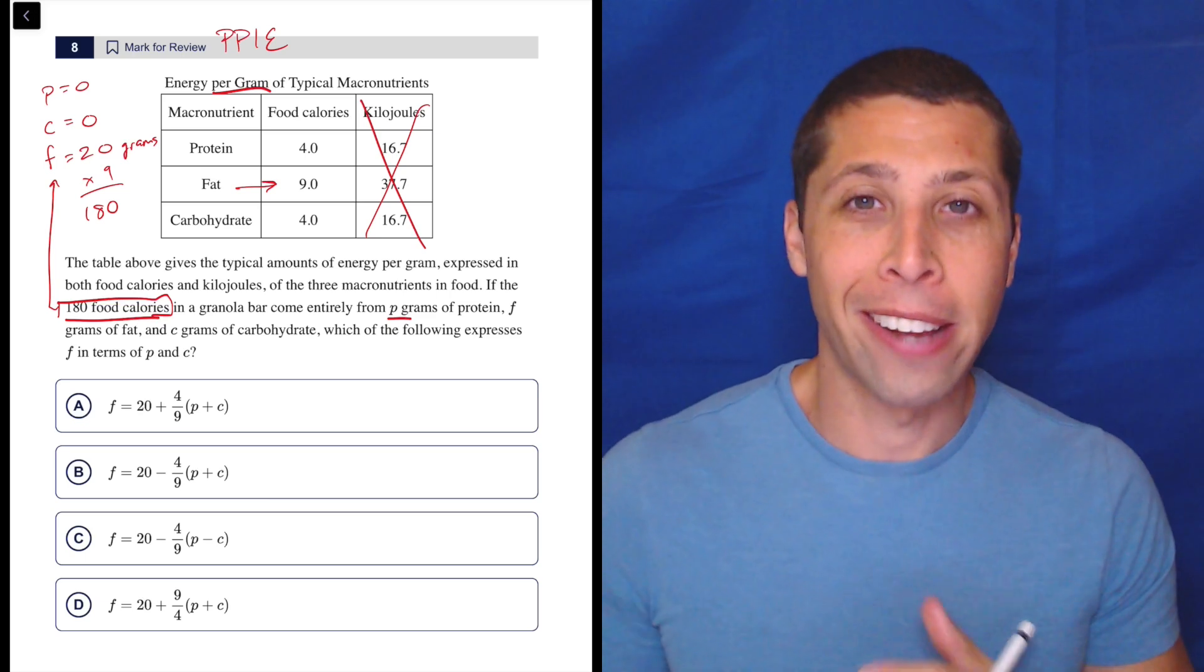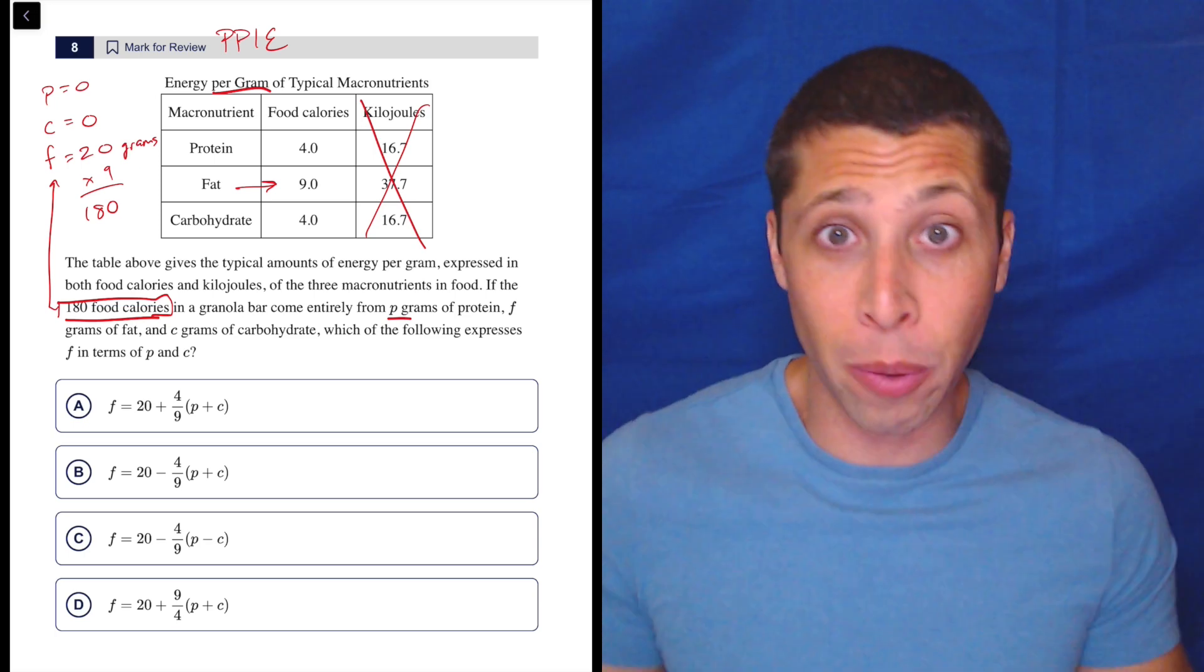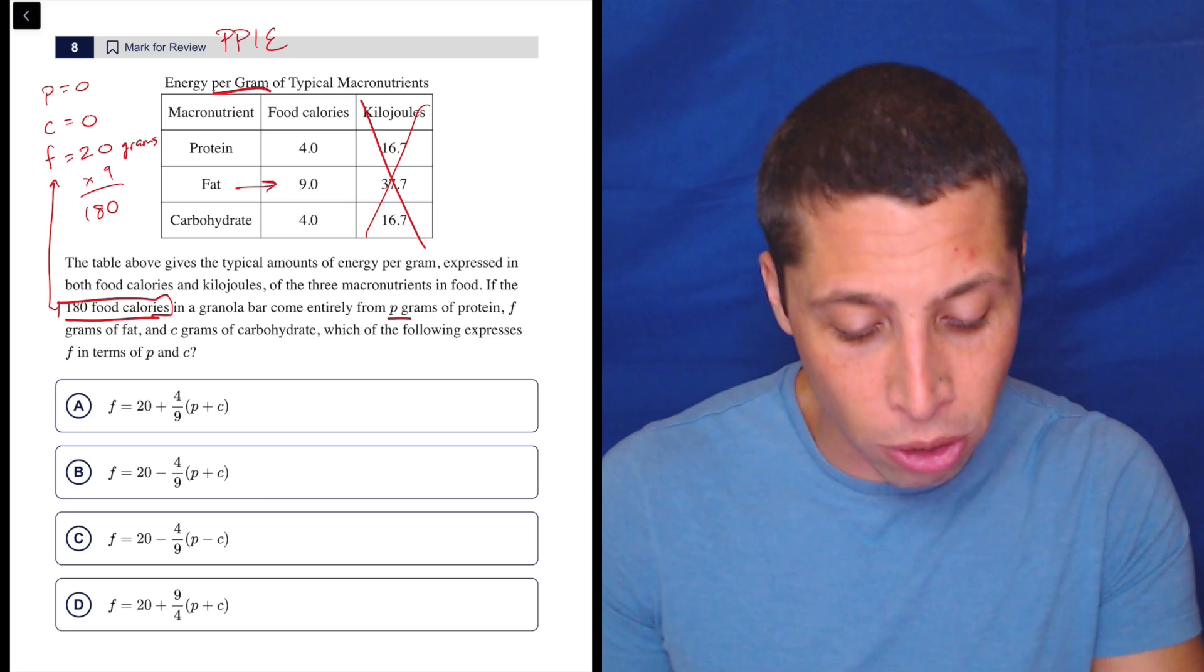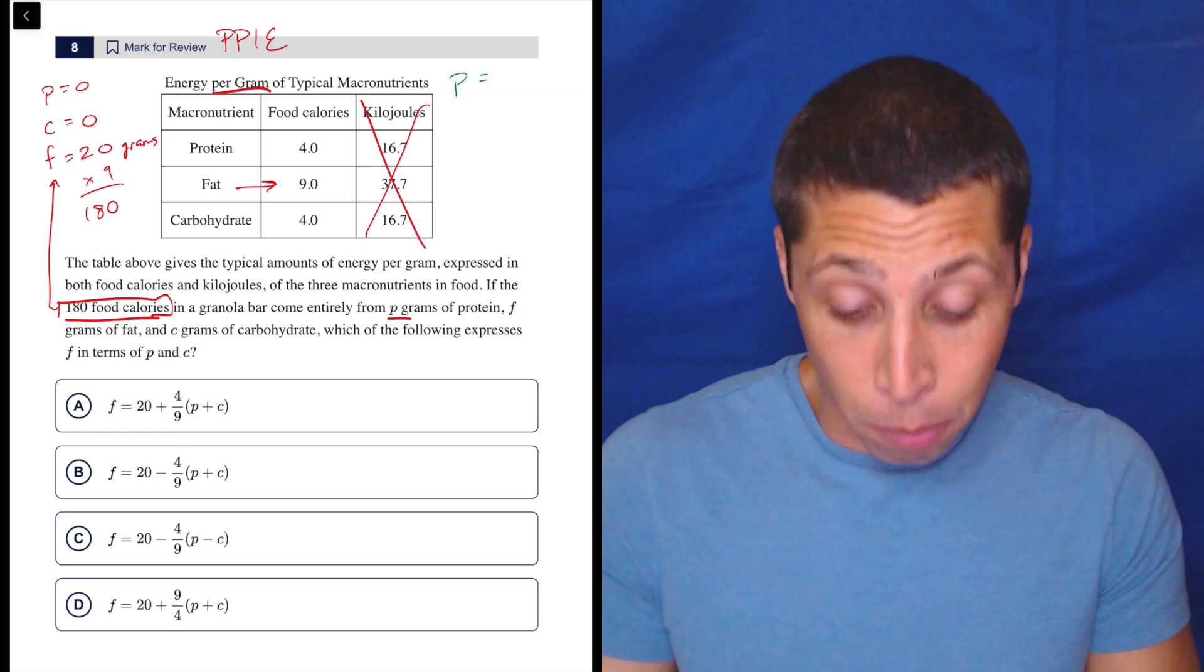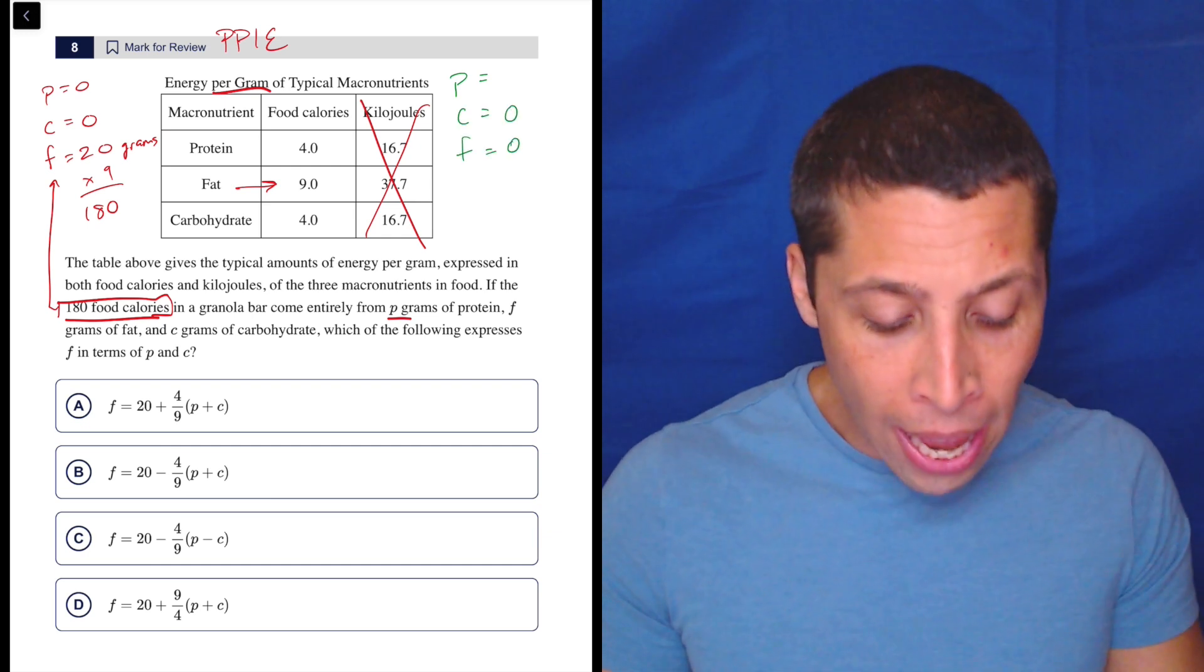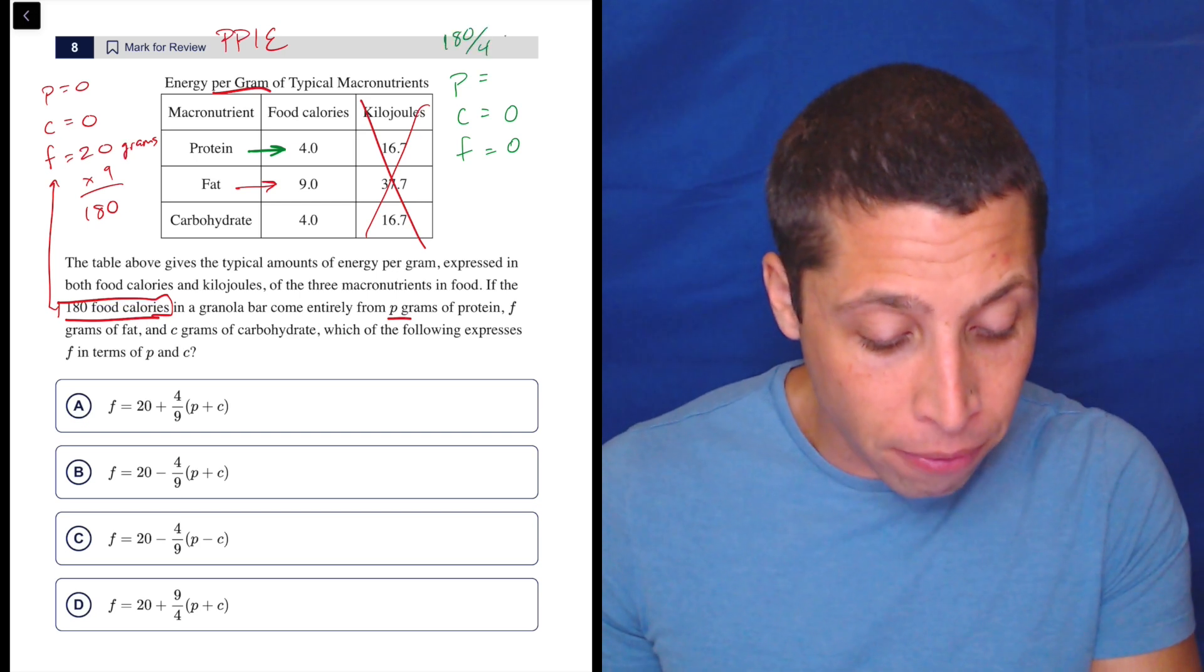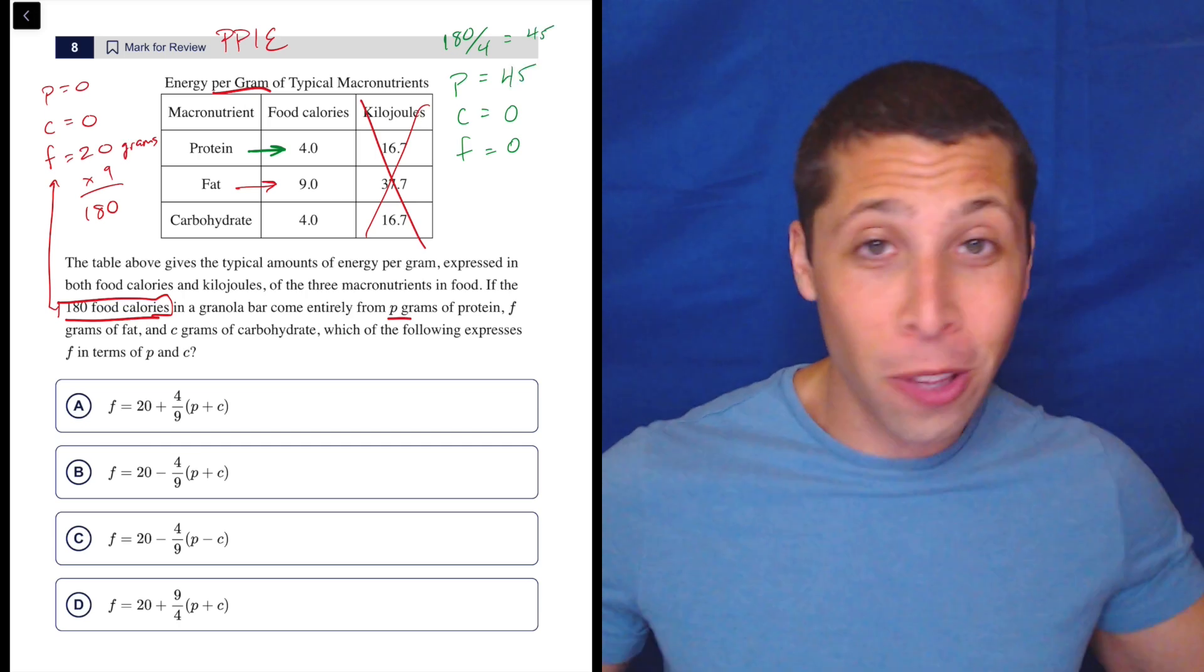But hopefully by forcing yourself to plug points into equations, you kind of start to peel away the mystery here and get to something. So obviously we can't use zero protein and carbs because then we're not going to understand which choice is right. All the choices would fit. So we need a new situation, but I understand kind of how I want to think about it. Let's make it so that all of this granola bar is protein. So let's make the C equal to zero and the F equal to zero. And that means now if it's all protein, we can kind of work it backwards. So there's four calories per gram of protein. So if I take my 180 and I divide it by four, that's going to be 45. So that means there's 45 grams of protein. And that's all that's in this disgusting granola bar.